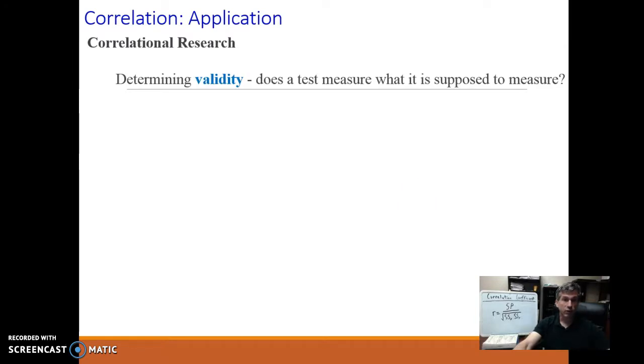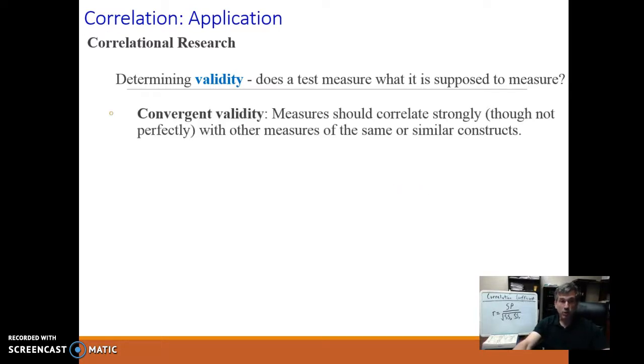We also use those correlations for validity, for the accuracy of what we're assessing. Does a test measure what it's supposed to measure? There are a few ways we can do this. One common way of establishing new measures, like say a new questionnaire to measure self-esteem, is to calculate what's called convergent validity. What that basically means is that I would take an established measure of self-esteem. I would have people fill out that measure and have them fill out my new measure, and then I'd correlate their scores. If those two questionnaires are assessing the same things, you would want them to correlate very strongly together.